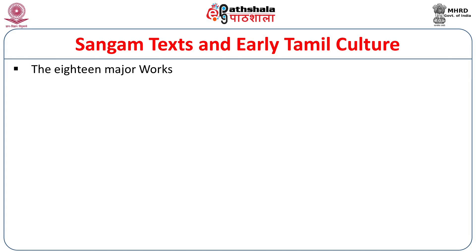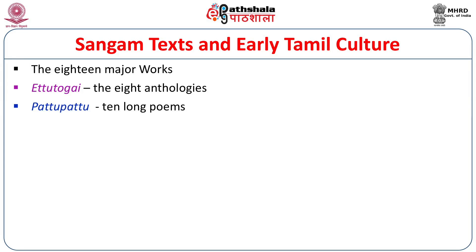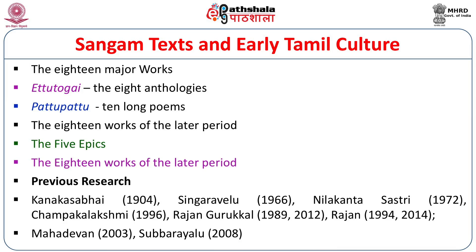The Sangam texts are the main source for understanding this cultural period. We have 18 major works — 8 anthologies and Pattupattu or 10 long poems. These poems are mainly secular in nature and mention the day-to-day activities of the people in great detail. These details are corroborated by archaeological evidence, and we need to combine both archaeological evidence and literary texts to understand the cultural period holistically.